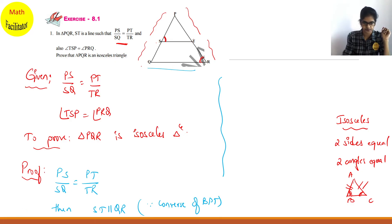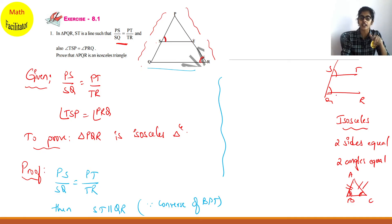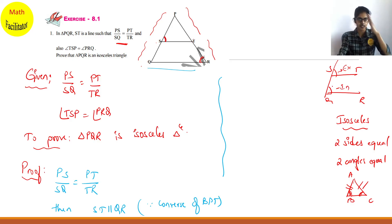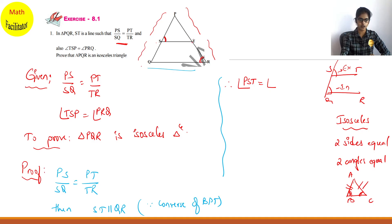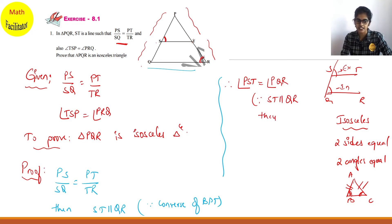When ST is parallel to QR, consider a transversal. The two angles formed are corresponding angles — one is exterior and one is interior, both on the same side of the transversal. Therefore, angle PST equals angle PQR, because ST is parallel to QR — they are corresponding angles.